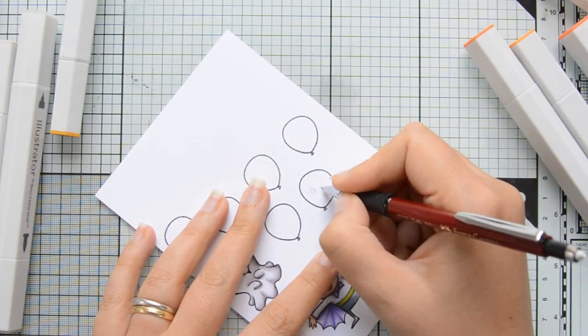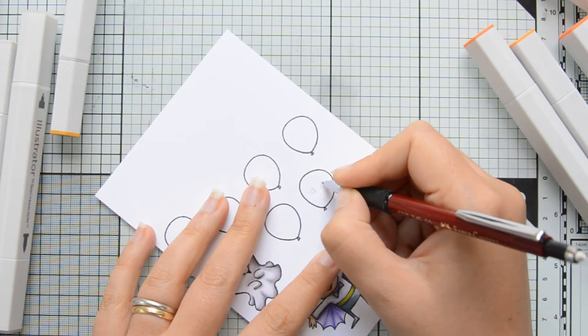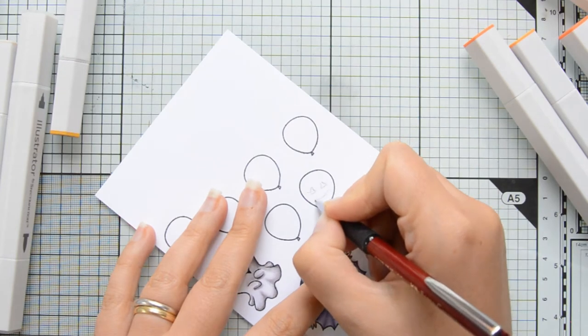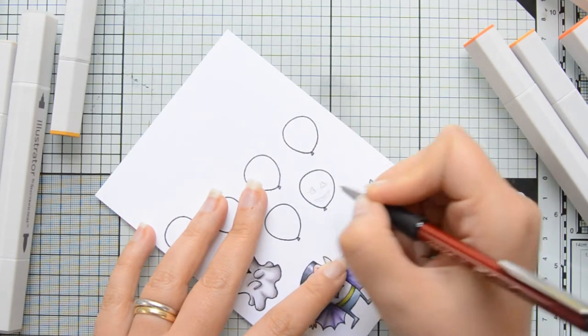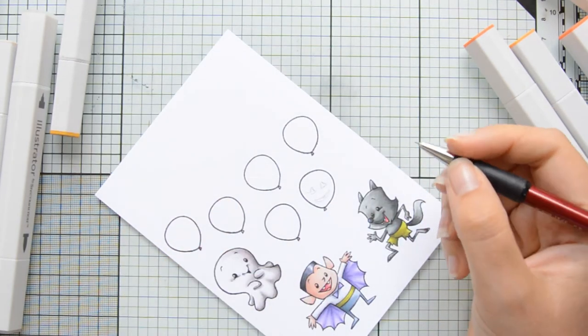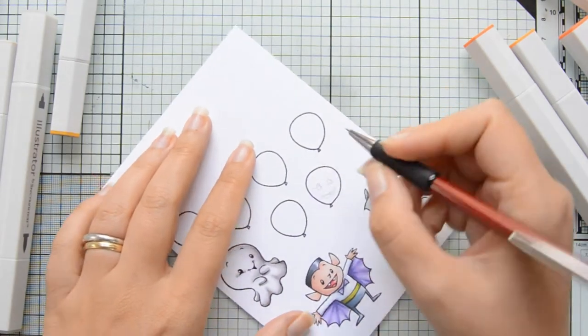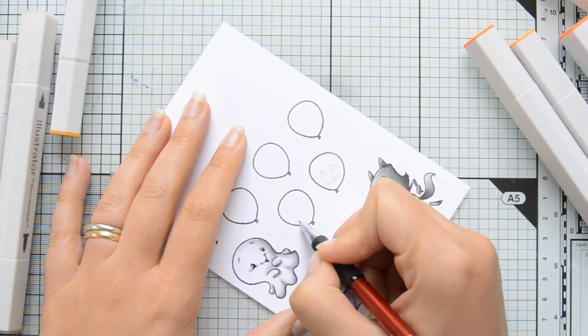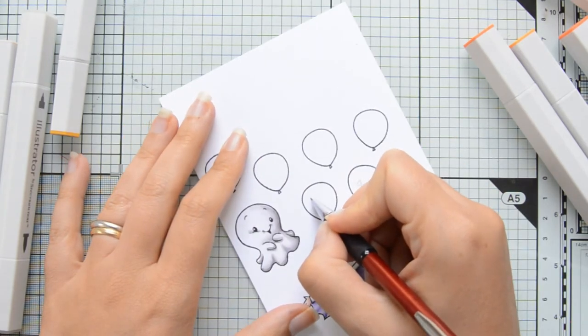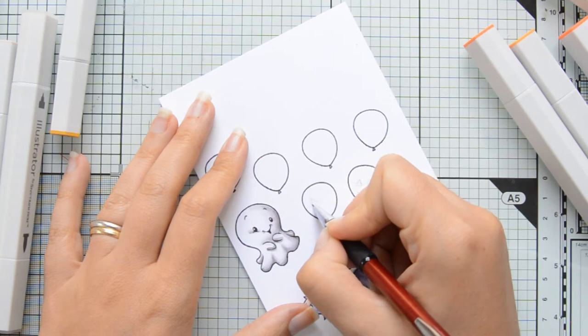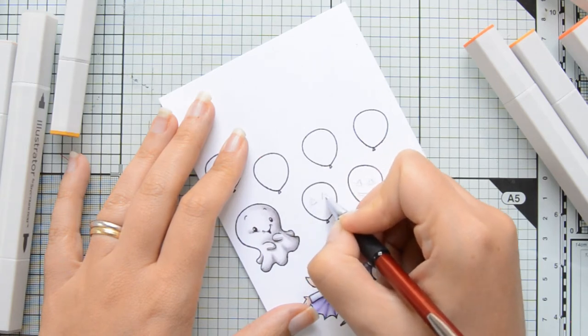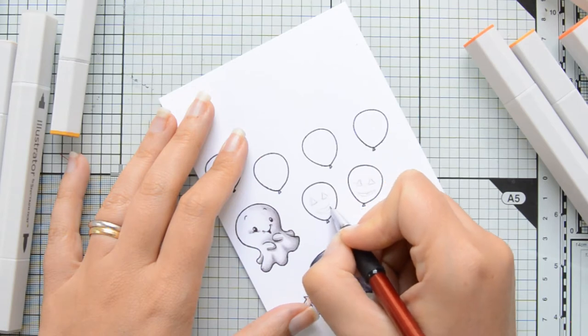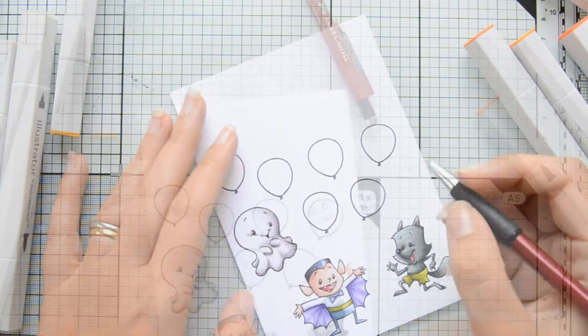Next, I wanted to show you how I added some jack-o-lantern faces to these balloons to make them match with the Halloween theme of this birthday card. This was very simple to make. I basically drew in two triangles for the eyes, then a smiley mouth and a little rectangle for the tooth. I drew two curved lines, one on the top third of the balloon and one on the bottom third of the balloon, to help me position the faces.